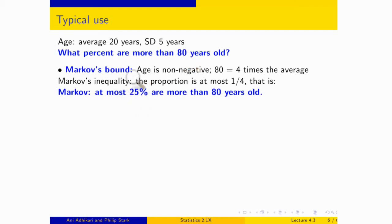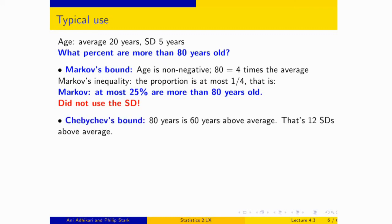Now Markov isn't saying there's 25% in that tail. He's saying there can't be any more than 25%. But our gut sense now is that there's quite a bit less than 25%. So let's see if we can get at that, and we can get at that by using Chebyshev. Markov did not use the SD, but Chebyshev does.